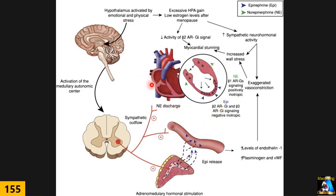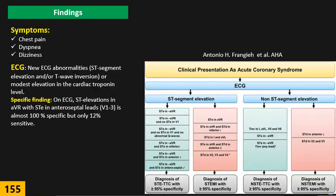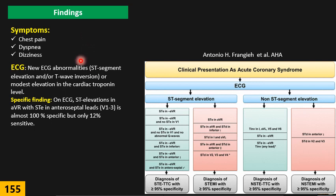The classic presentation of Takotsubo cardiomyopathy is like acute coronary syndrome: acute chest pain exactly like myocardial infarction, dyspnea, dizziness, sometimes syncope or arrhythmia, tachycardia, PVCs, and so on. EKG findings can include all types of changes seen in MI — ST-segment elevation or depression, T-wave inversion, and so on.